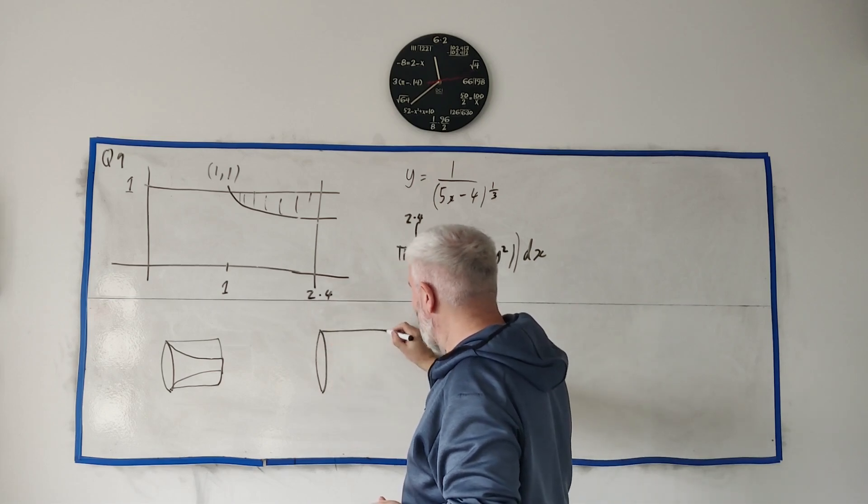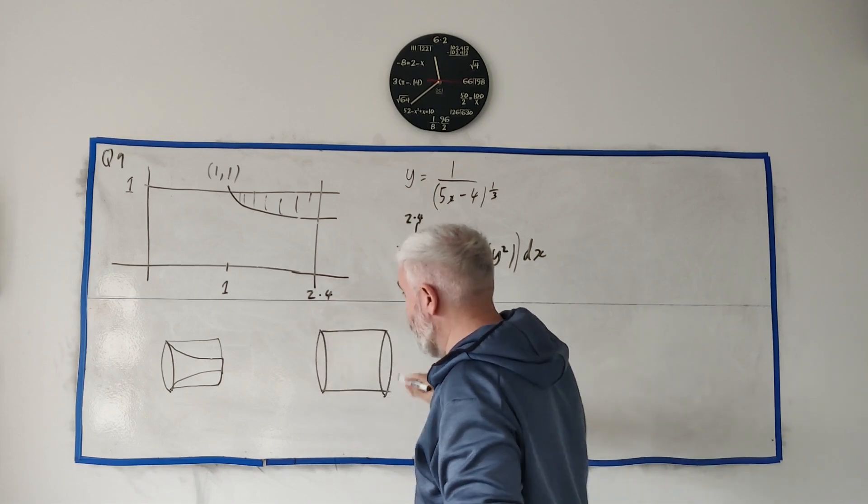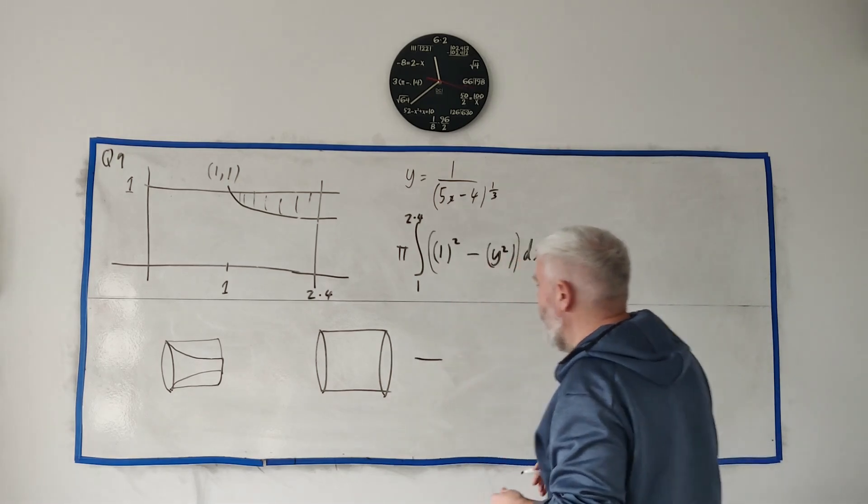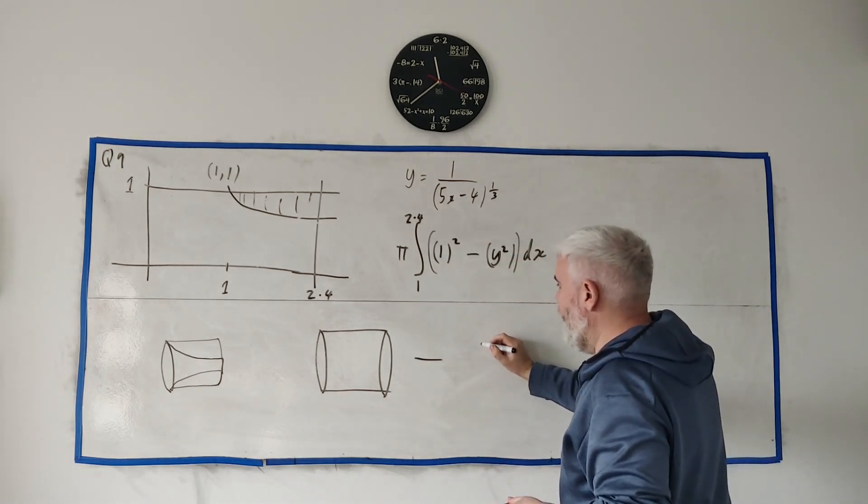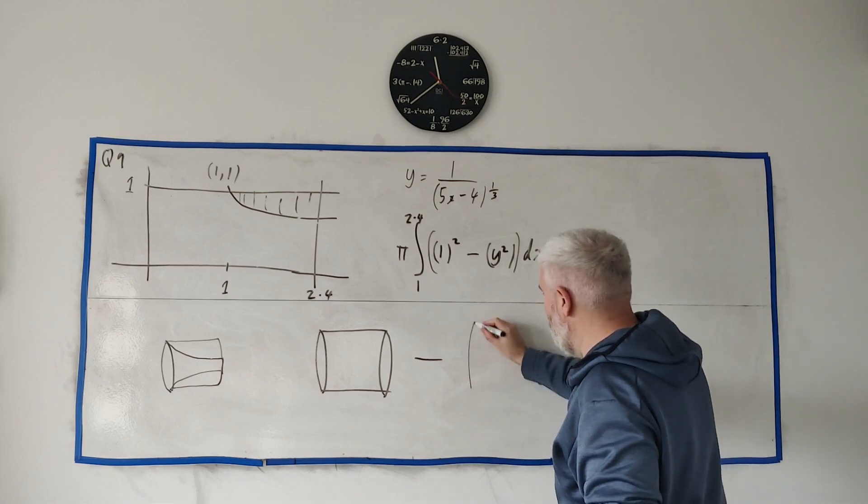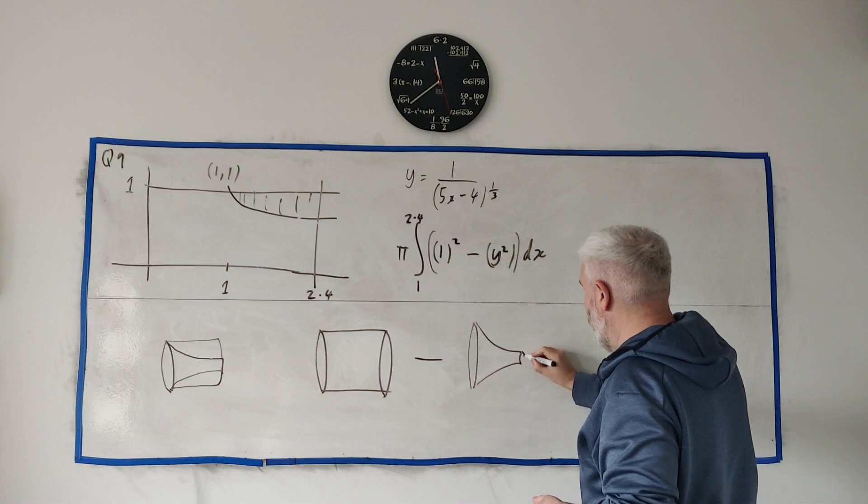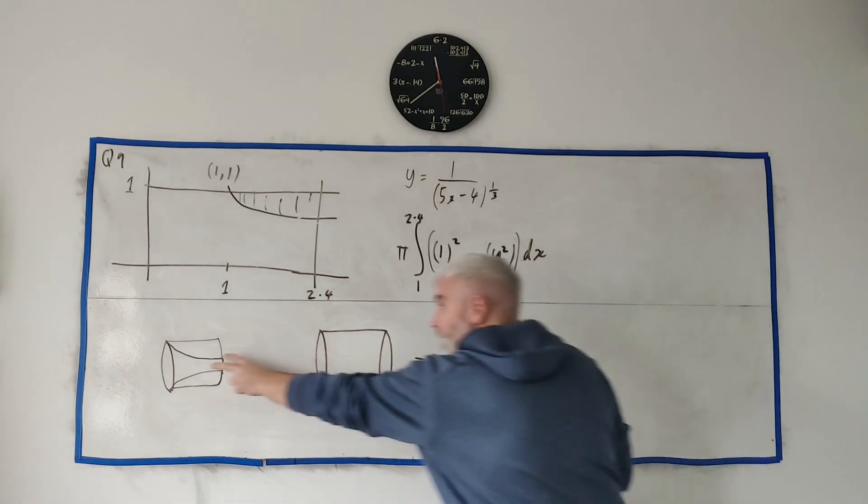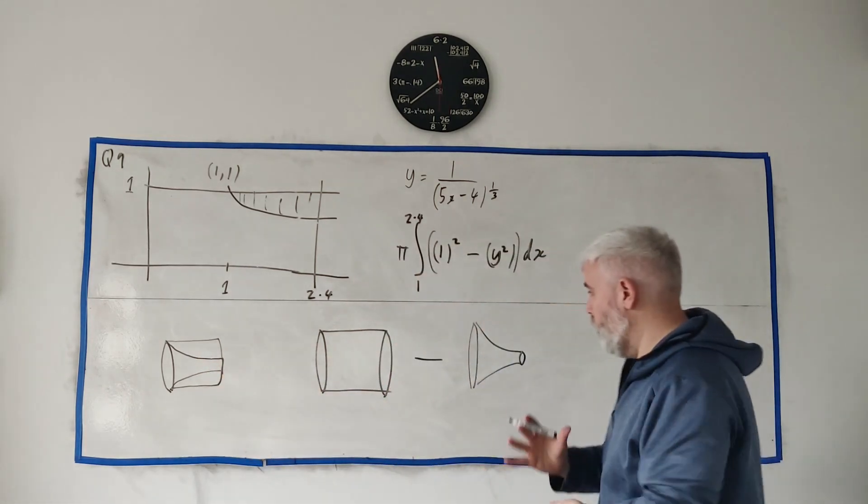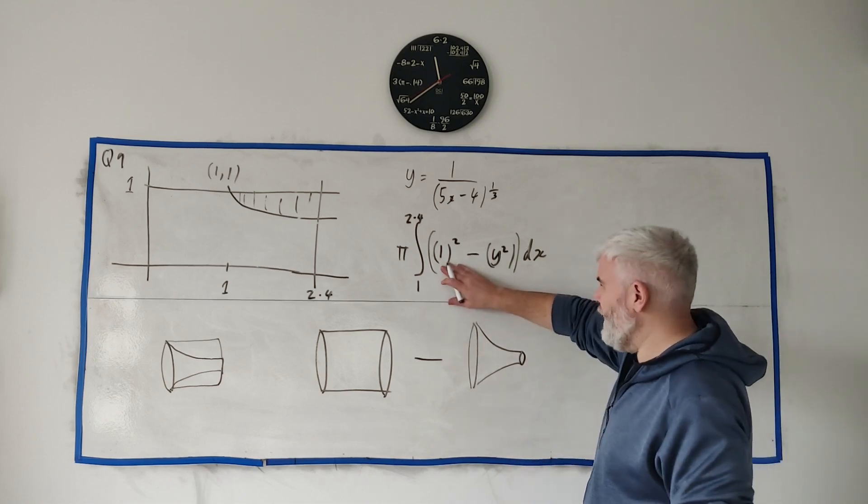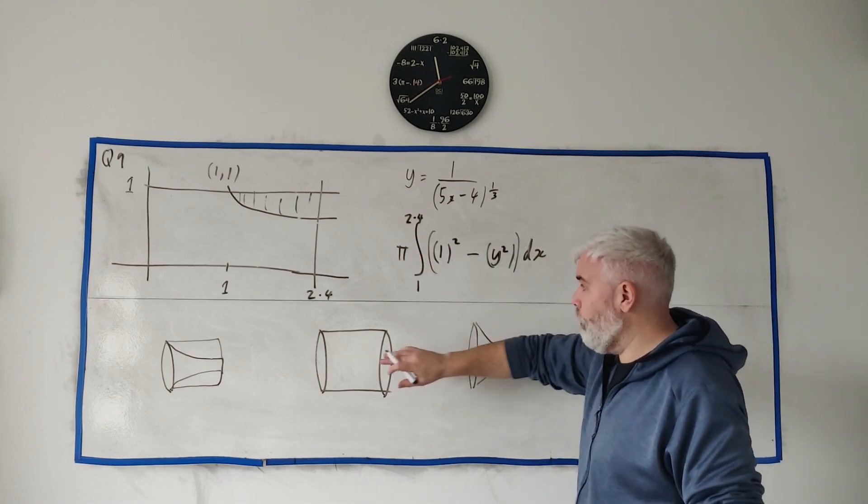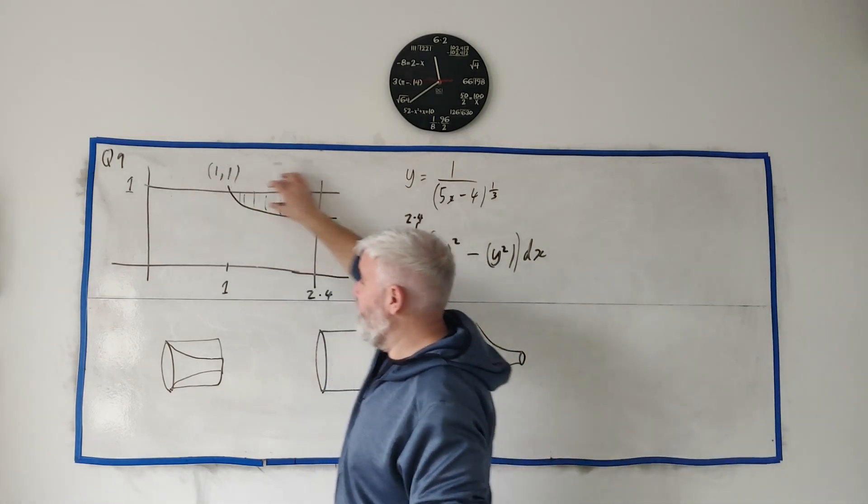Let's instead of making this shape, because that's what this does - makes this shape in one go, let's do it this way. Let's make this shape, a cylinder, and then take away this shape.